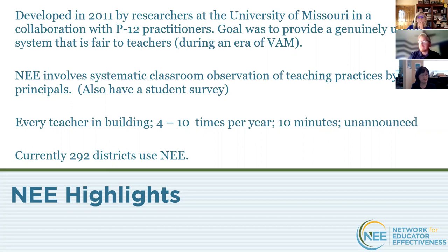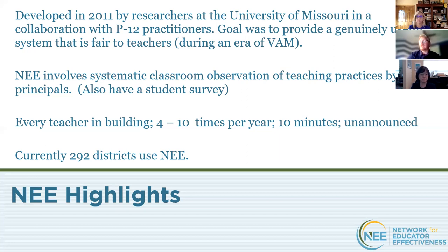We ask and recommend that each teacher inside each building is observed four to ten times per year, at ten minutes at a time, and we recommend those be unannounced. That gives us a really good framework for understanding, on a daily basis, what teaching practices are occurring in the classroom and how frequently. NEE currently has 292 districts, most from the state of Missouri, but we are also in Illinois, Nebraska, and Kansas, growing beyond a state-level evaluation system into a more regional one.